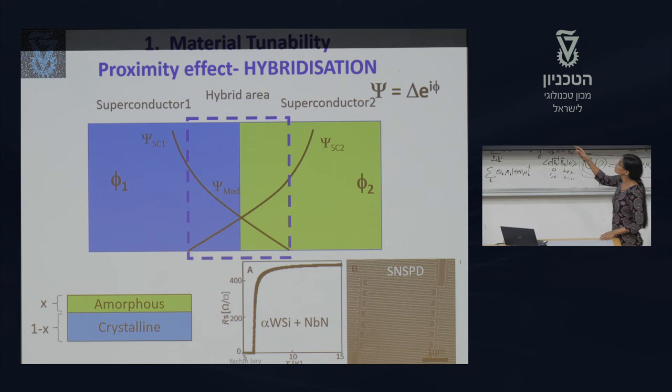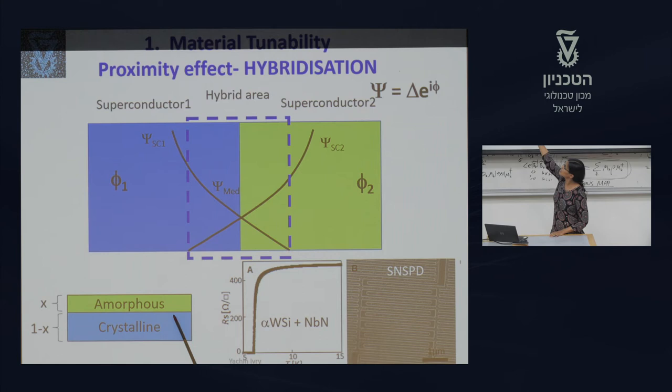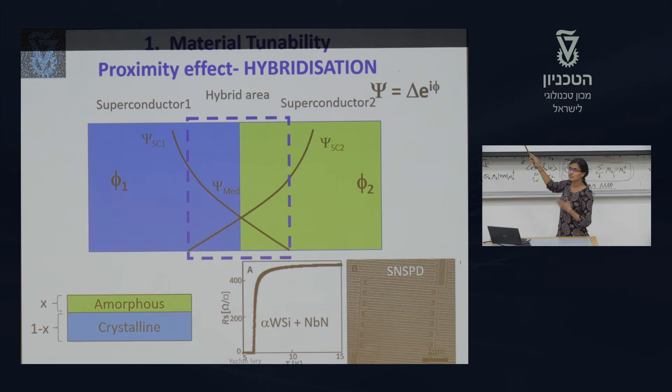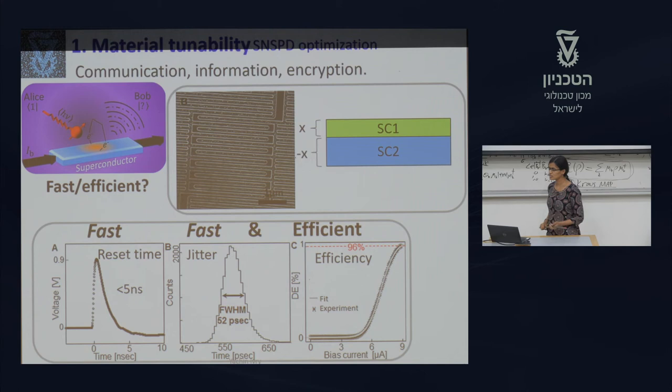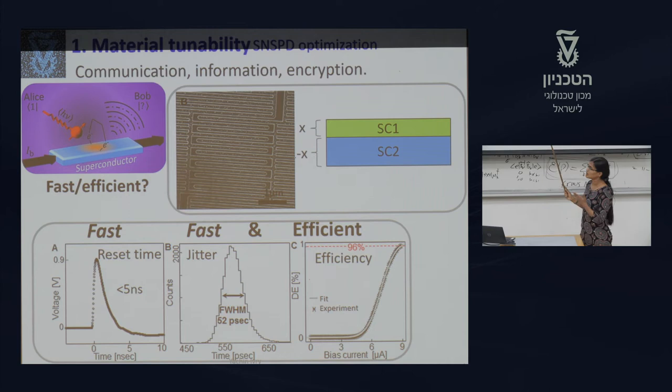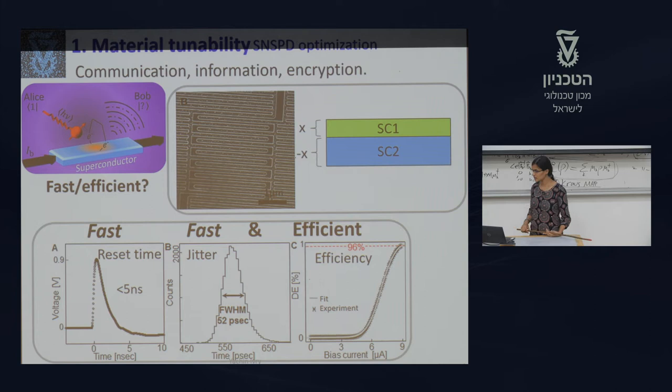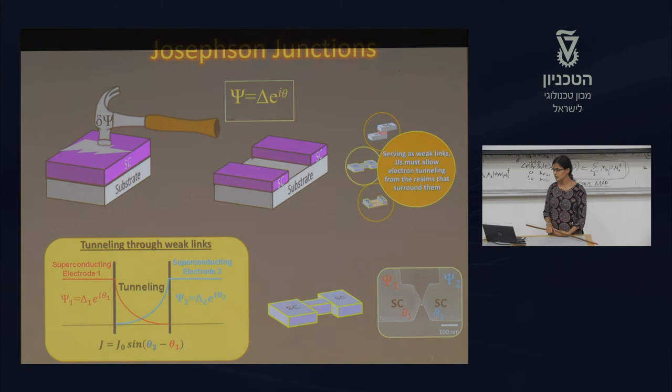We want to tune one superconducting material. What we do is put another superconducting material nearby, and by changing the wave functions through the proximity effect, we tune the quantum devices. One application is SNSPD — superconducting nanowire single photon detectors — for which we want minimum reset time, fast jitter, and good efficiency, achieved using two superconducting materials and the proximity effect.